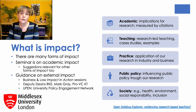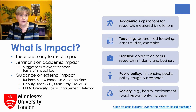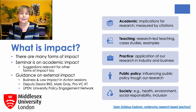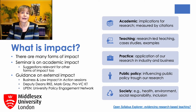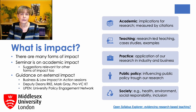The first is academic impact. This refers to the implications of our research for other researchers and is generally measured by citations. I'm not going to engage in a long discussion about whether or not that's an appropriate measure of academic impact. It's a bit like democracy — it might not be ideal, but it's the best system we have.